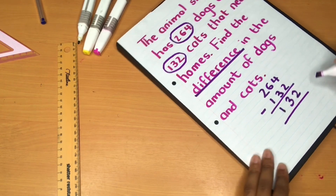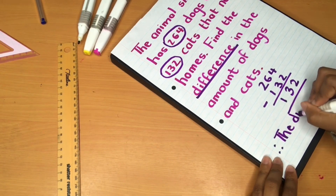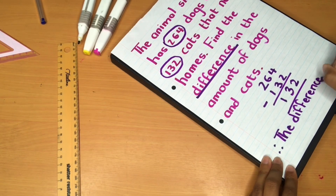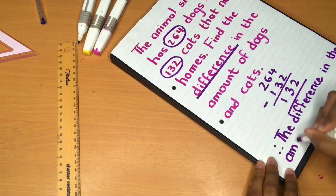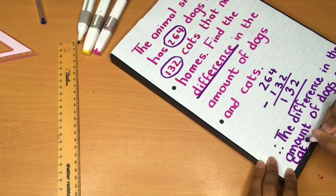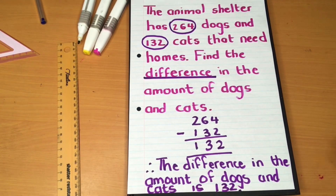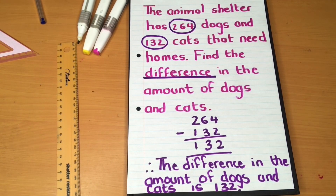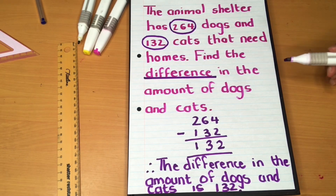2 minus 1 equals 1. Therefore the difference in the amount of dogs and cats is 132. We've shown our working out: 264 minus 132 equals 132, and we've answered our word problem — the difference in the amount of dogs and cats is 132.